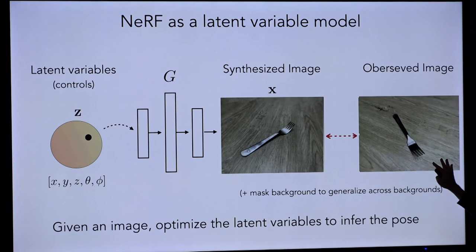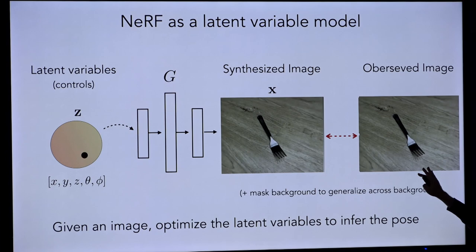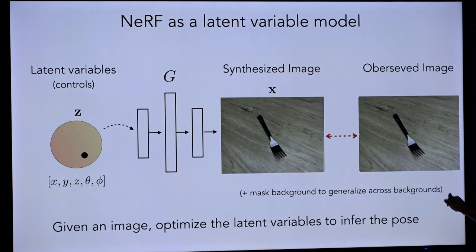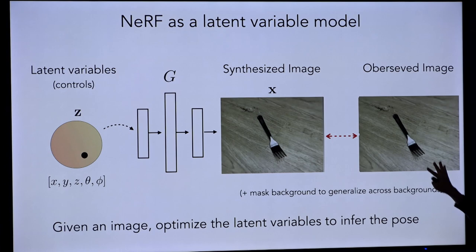Here's the basic idea: we have an observed image — say, a fork — and we have our NeRF representing what that fork would look like on that background from any potential angle. We can simply search in z-space, the latent variable space, for the camera direction that will match the observed image. To generalize beyond a particular background, we do some background masking. Now I have my mental model — my mental image of what the fork will look like under any rotation. If I see the fork under a new rotation, I estimate its rotation by searching over my mental model to find what angle I'd need to look at it to match what I'm currently seeing.